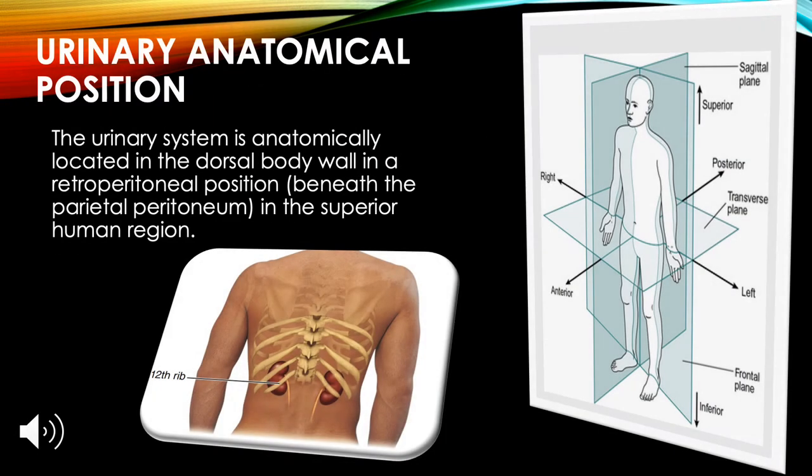Urinary anatomical position: The urinary system is anatomically located in the dorsal body wall in a retroperitoneal position, beneath the parietal peritoneum in the superior lumbar region.